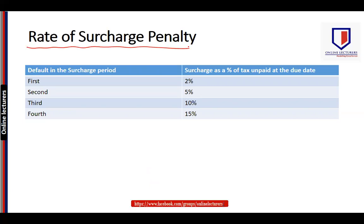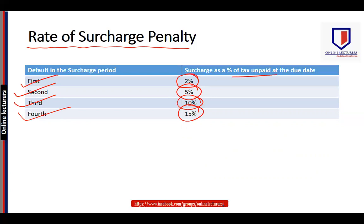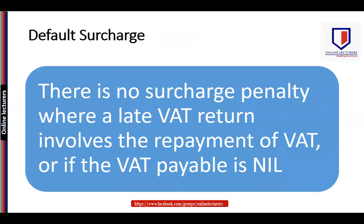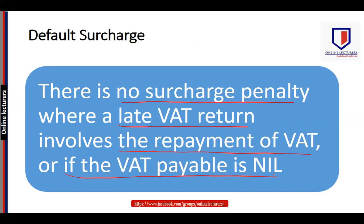The surcharge penalty rates are: if this is the first default in the surcharge period, the penalty is 2% of the unpaid VAT; second default is 5%; third default is 10%; and fourth default is 15%. There is no surcharge penalty where a late VAT return involves a repayment of VAT or where the VAT payable is nil — surcharge penalty only applies when tax is owed.